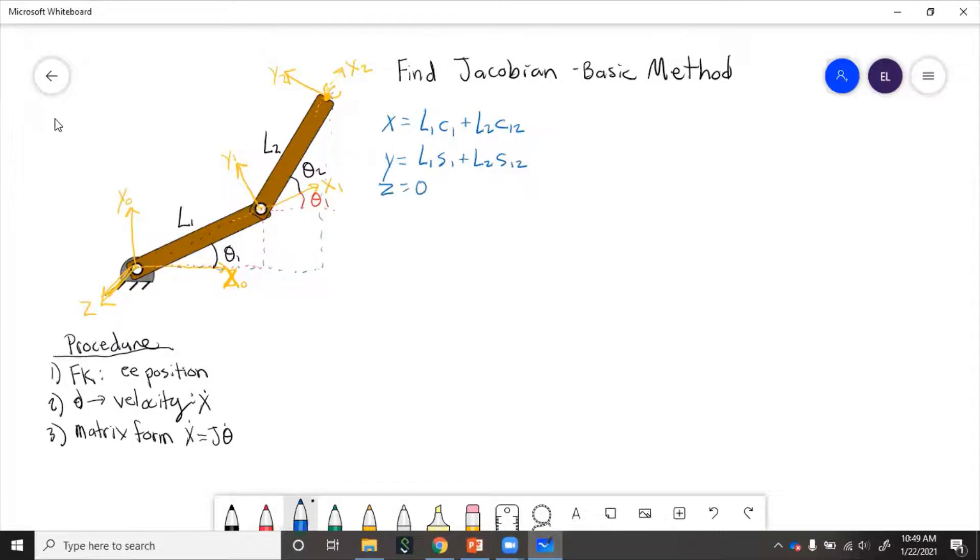So now we take the derivative of these and get velocity. Remember to use product rule because cosine of theta one plus theta two is going to have theta one inside of it and theta two inside of it.